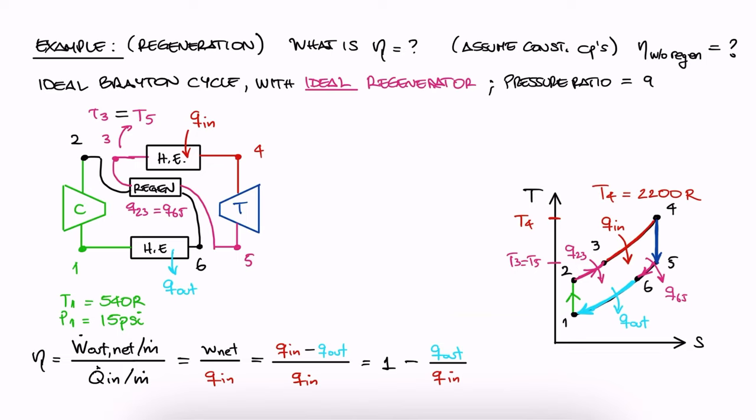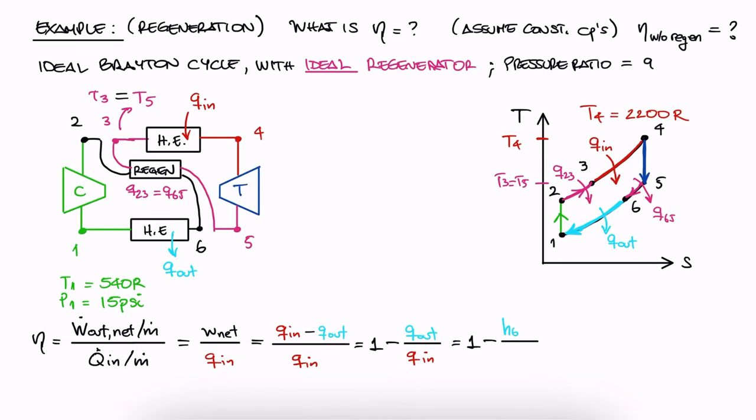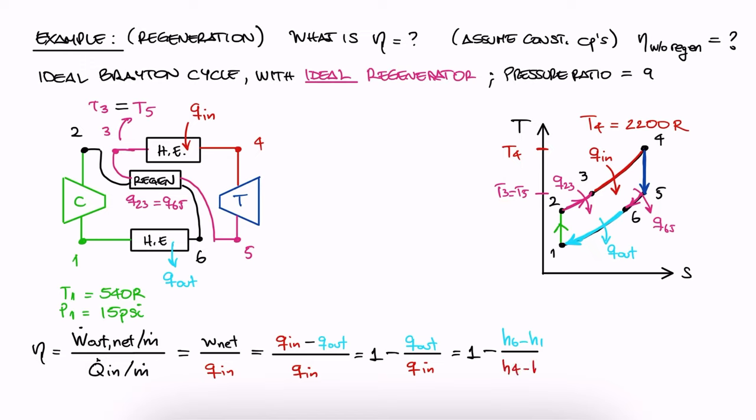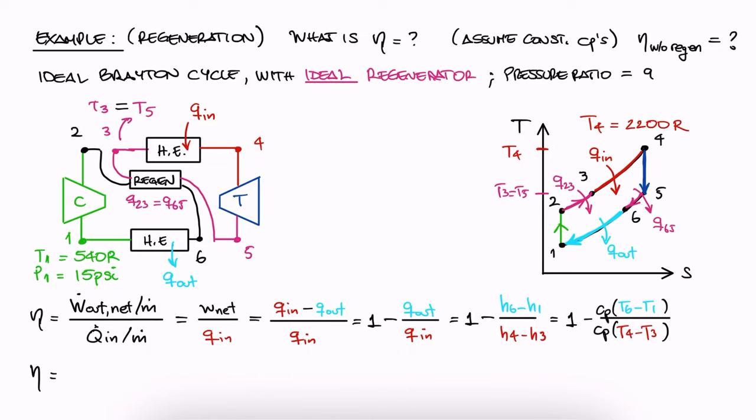In other words, Qout is H6 minus H1, and Qin is H4 minus H3. And since the problem asks specifically to use constant specific heats, we can write these specific enthalpies in terms of a constant CP value. Therefore, the efficiency expression reduces to temperature values. The value for T4 we have, because it's the maximum temperature of the cycle, and T1 is the temperature before the compressor, also given.